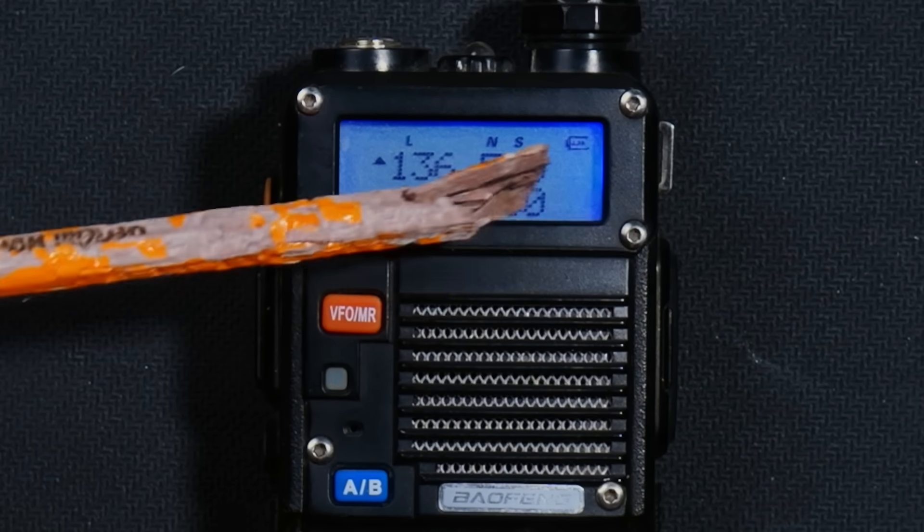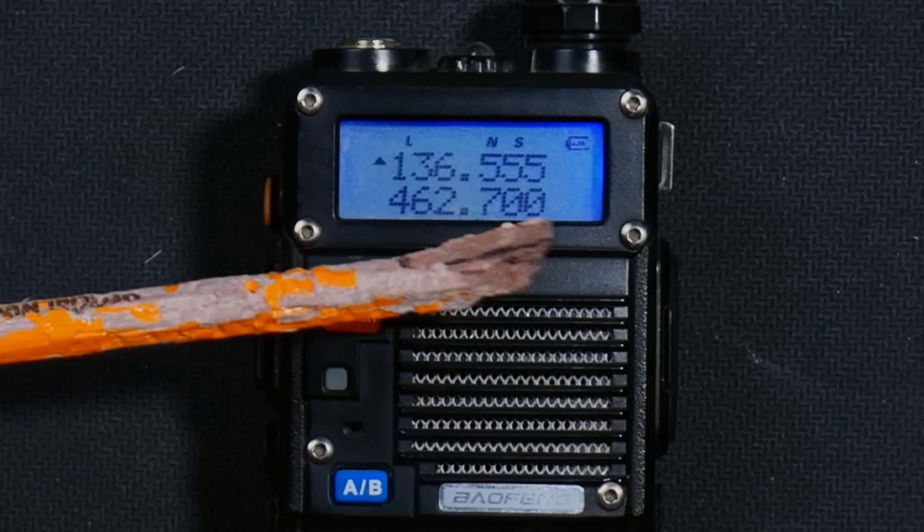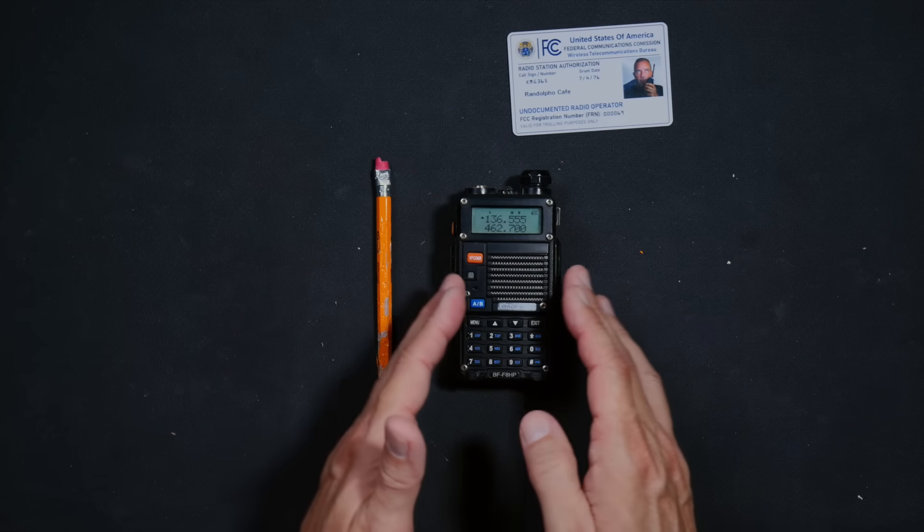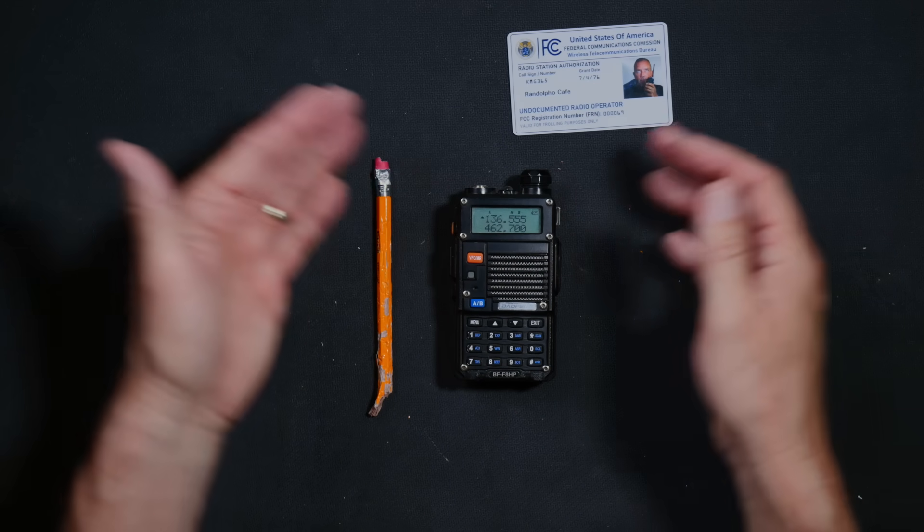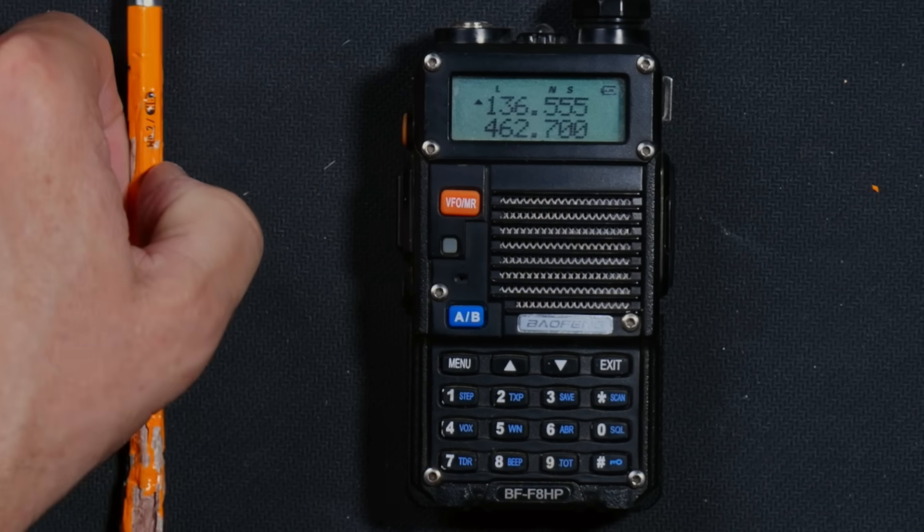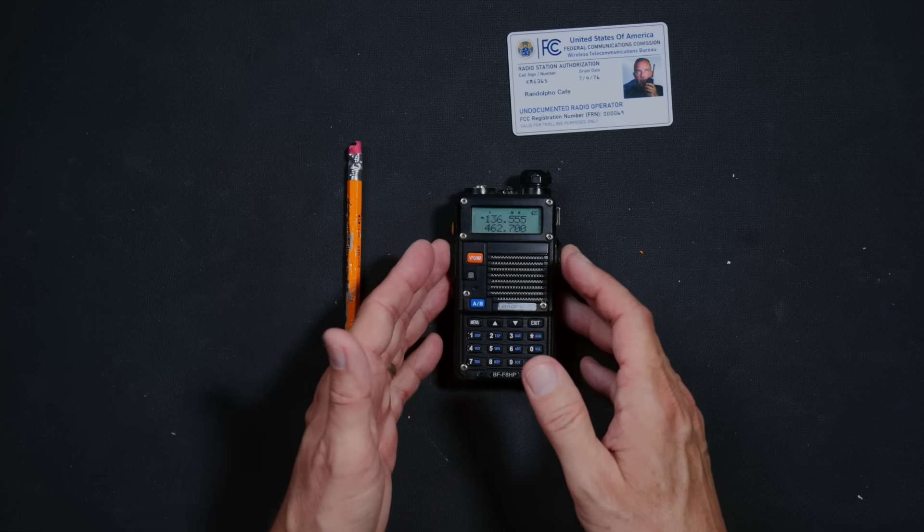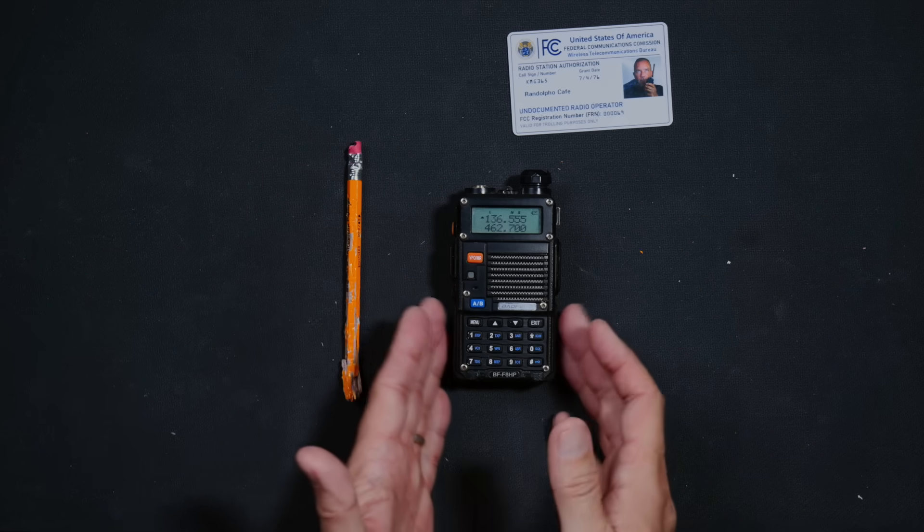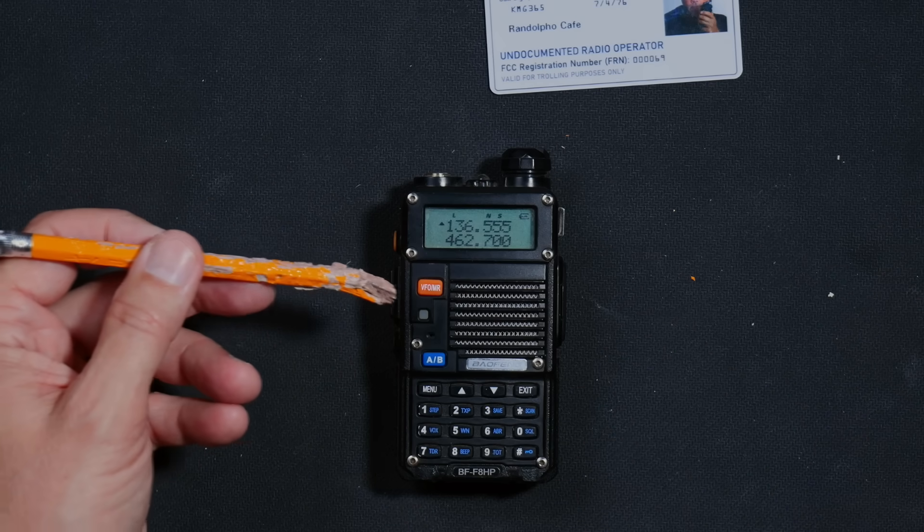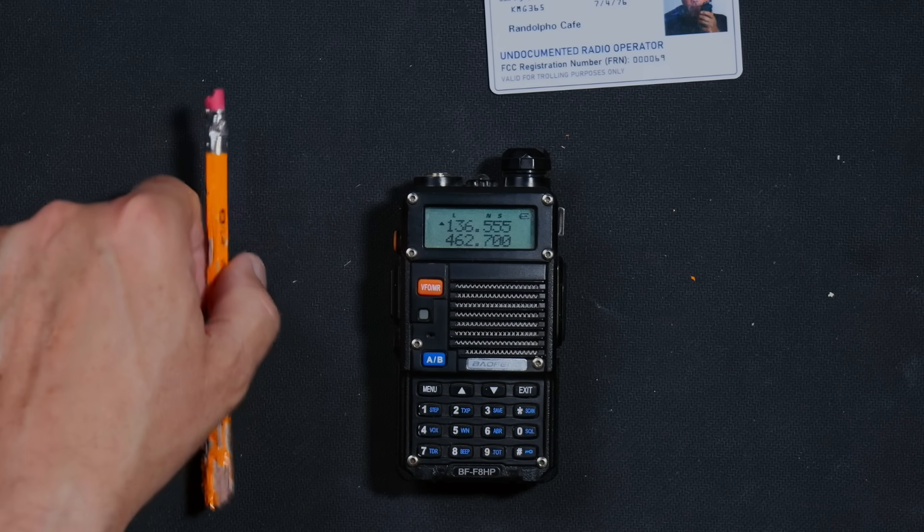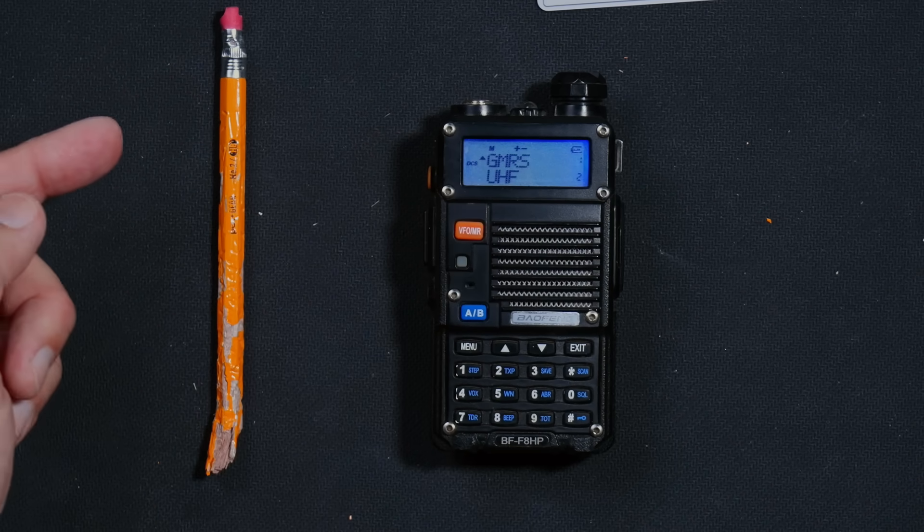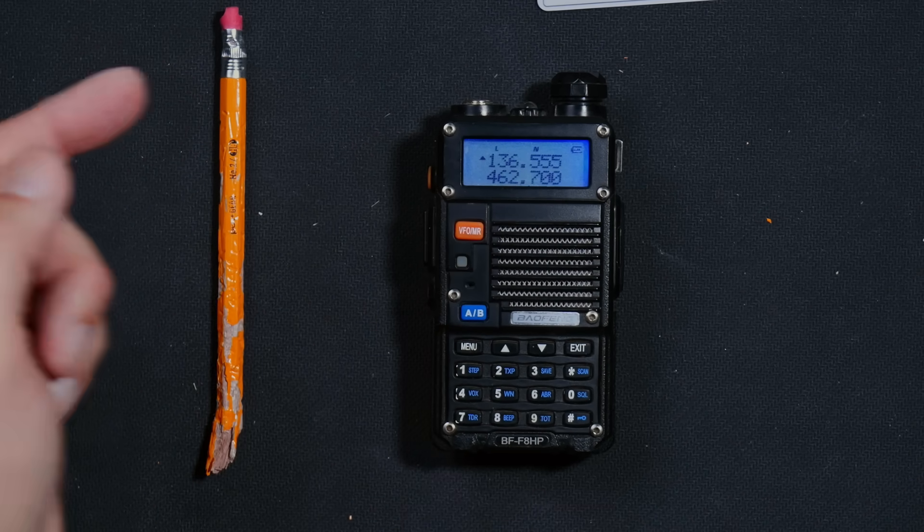And when in VFO mode, you will see no little channel numbers on the screen. So to switch between these two modes of operation, you simply push the big red orange VFO MR button. And as an added bonus, if you have the voice mode enabled, the sexy Chinese lady will tell you which mode you are in every time you push the big orange button. Thusly, frequency mode, channel mode, frequency mode.